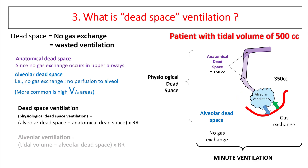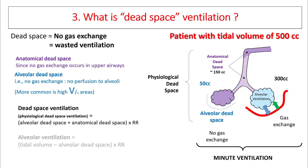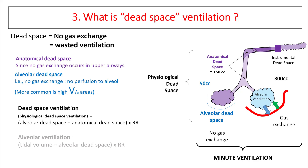For example, a patient with tidal volume of 500 cc: 150 cc will remain in anatomical dead space and 350 cc will go towards alveolar ventilation where gas exchange can happen. If you have alveolar dead space, say for example 50 cc, this will be subtracted from the normal alveoli, which is now only getting 300 cc. Another form of dead space ventilation is instrumental dead space, seen in patients who are intubated or have a mask in front of their nose, increasing the air that is re-breathed in.